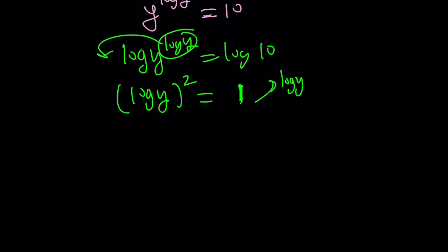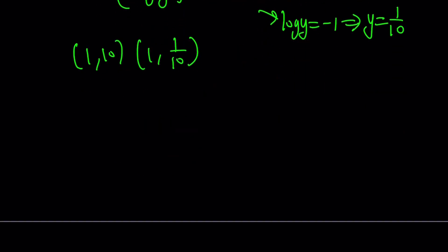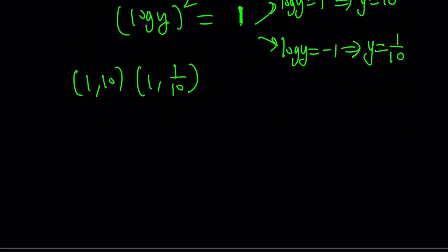Log y equals 1 and log y equals negative 1. But we have said x and y have to be positive. It's okay. X and y are positive, but log y can be negative, right? This just means y equals 10, and this just means y equals 1 tenth. So that means when x equals 1, y can be 10 or 1 tenth. And since they're interchangeable, the same thing is true for y and x, or x and y. Hopefully you get the idea.